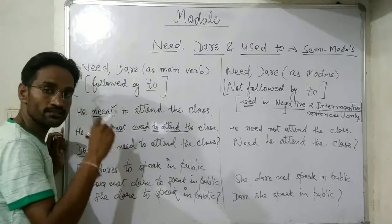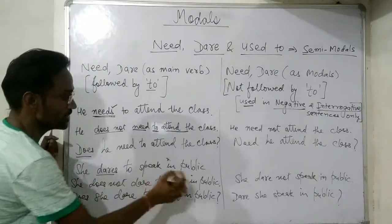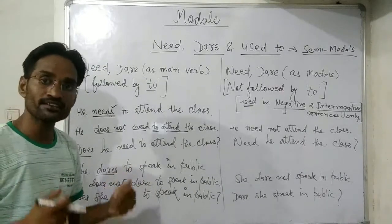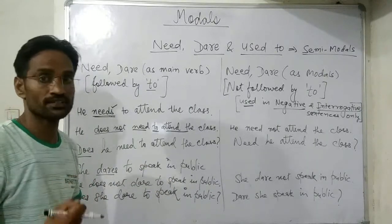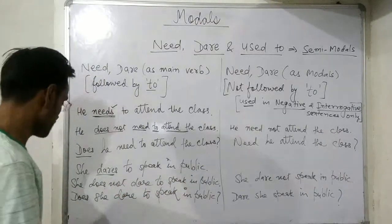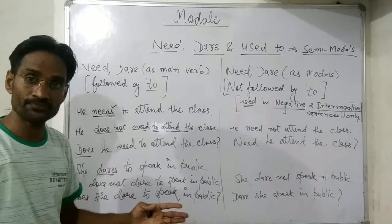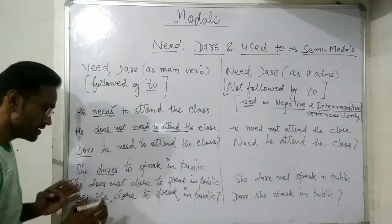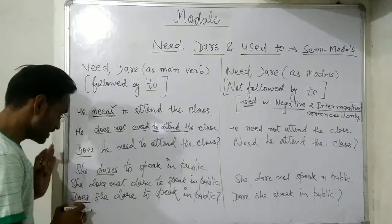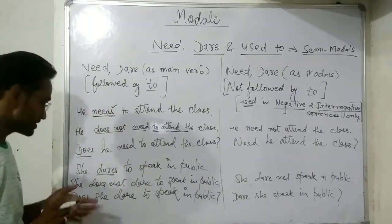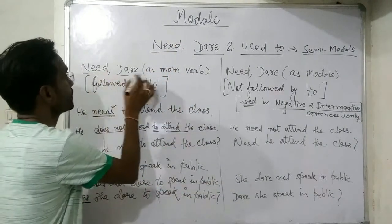Need as a main verb can be used in present tense, past tense, and future tense. Now for dare: 'She dares to speak in public' — dare means to have courage or boldness. 'She dares to speak in public' means she has the courage to speak in public. Negative: 'She does not dare to speak in public.' Interrogative: 'Does she dare to speak in public?' So here dare is also used as a main verb in positive, negative, and interrogative sentences.